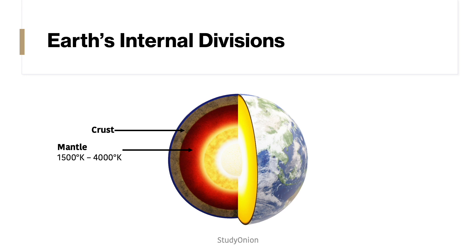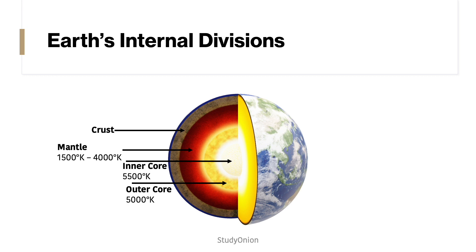These convection currents drive the motion of the tectonic plates. The outer core is a liquid layer of iron and nickel, about 2,266 kilometres thick, with a temperature of around 5,000 Kelvin. The charged particles which flow here are responsible for the Earth's magnetic field, which protects us from radiation from the sun. The inner core, at temperatures of around 5,500 Kelvin, prevents the iron and nickel there from melting.